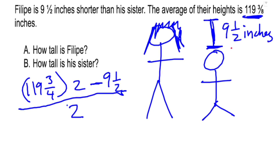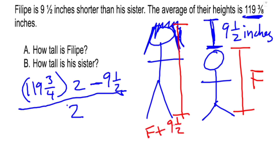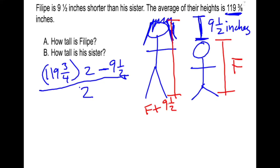If I call Philippe's height F, then I can call his sister's height F plus nine and a half. Add those two numbers together, we'll have two F's. Two times Philippe's height plus nine and a half, the extra for his sister.